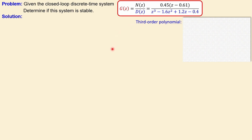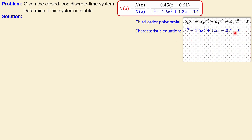The solution begins by examining the polynomial of the denominator. The general polynomial of a third-order system is: a3·z³ + a2·z² + a1·z + a0. The characteristic equation is given by the denominator equated to zero. Checking the coefficients: a3 = 1 (coefficient of z³), a2 = −1.6 (coefficient of z²), a1 = 1.2 (coefficient of z), and a0 = −0.4. It is handy to write these down as a list for use in further steps.